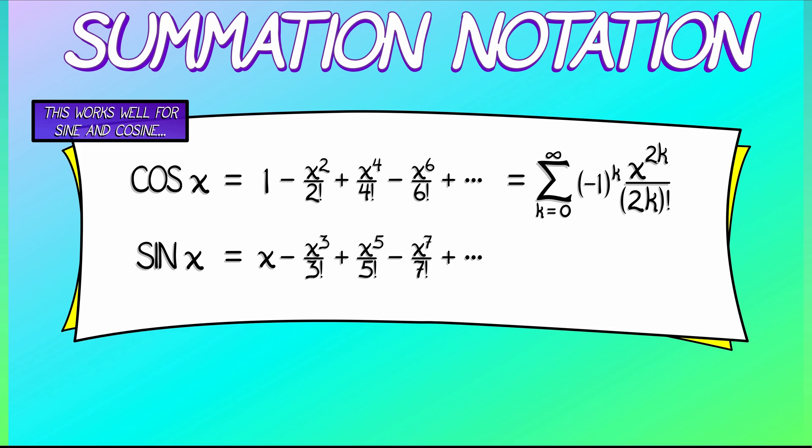Once you're comfortable with that, it will be easy to see what we do to modify this to get a summation notation for the sine series. We're going to take the sum, k goes from 0 to infinity, of negative 1 to the k times x to the 2k plus 1 divided by quantity, 2k plus 1 factorial.